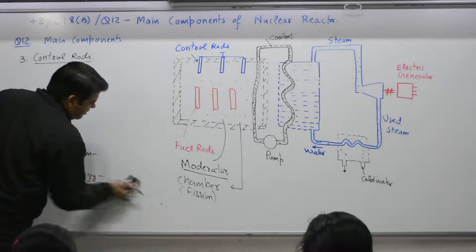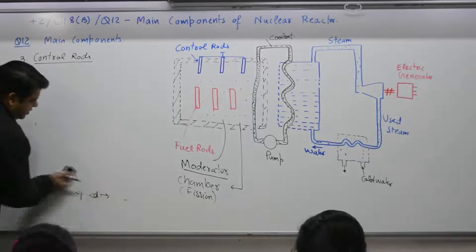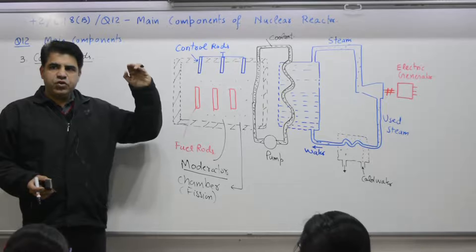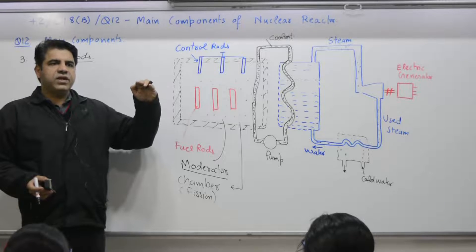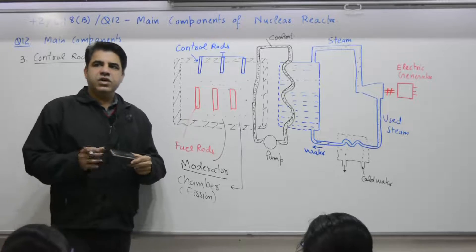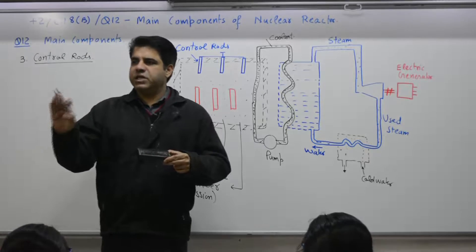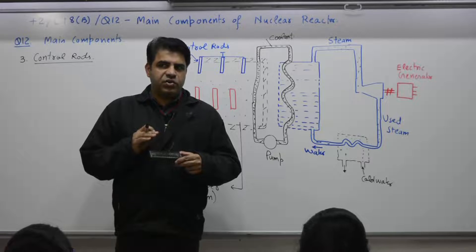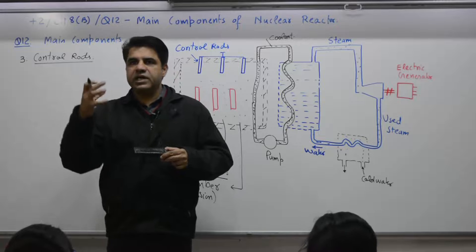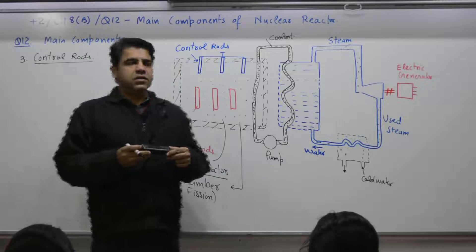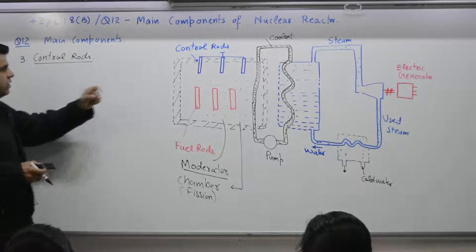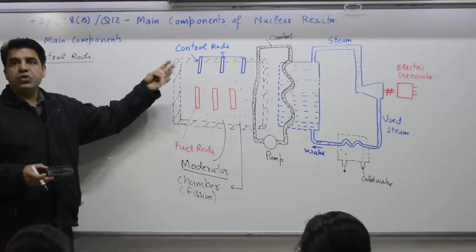If more neutrons are available, more reactions will take place. More energy is available. If the number of neutrons decrease, number of reactions taking place will also decrease. Energy will also decrease. So, in a car, you have an accelerator. By changing the accelerator position, you can control the fuel supply.